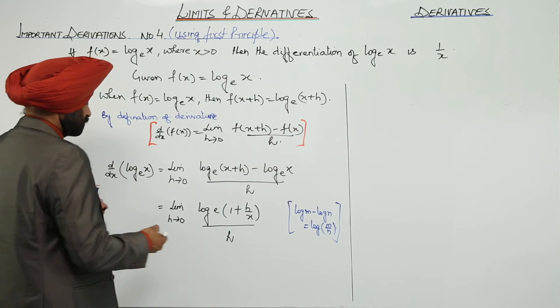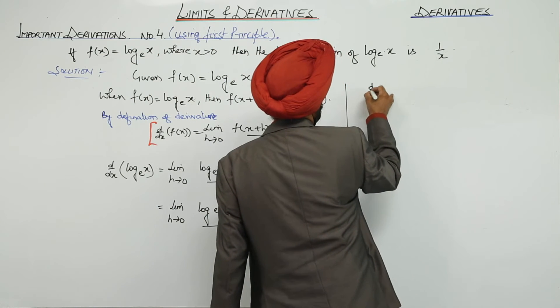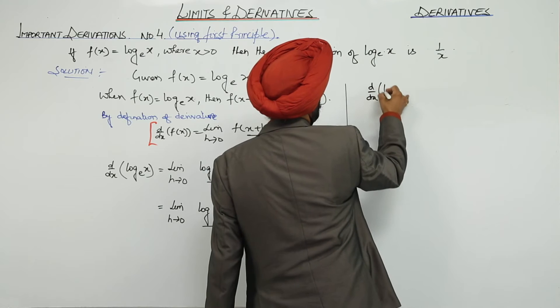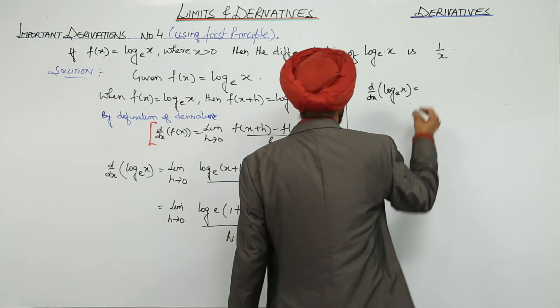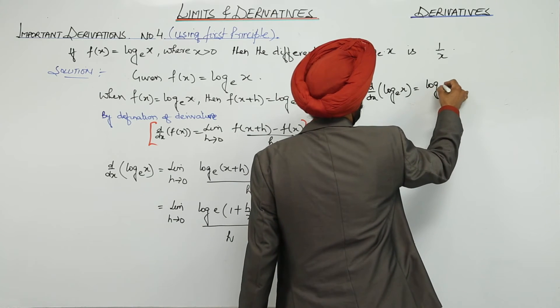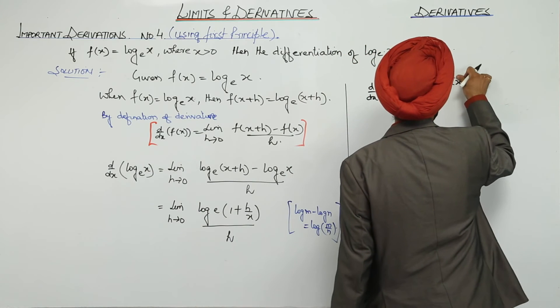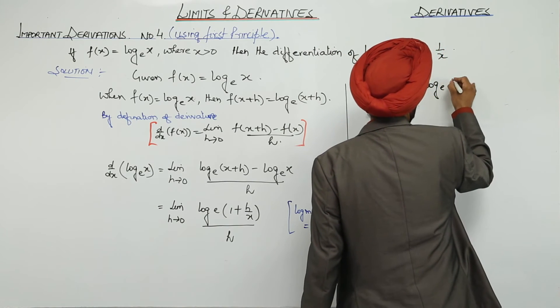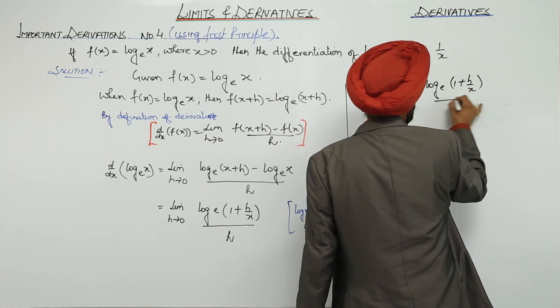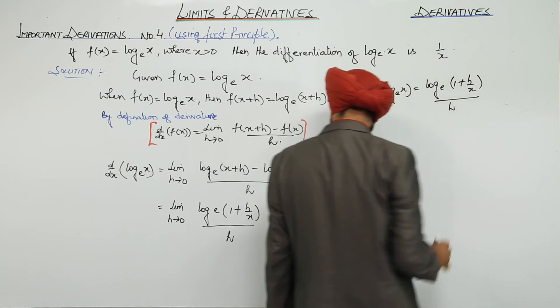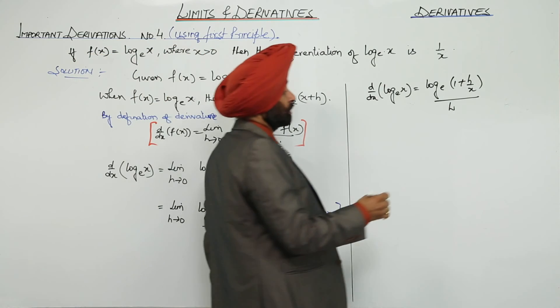Now, to this further we can write it. d by dx for log x is equal to... We are already having h here. So, what it becomes now?